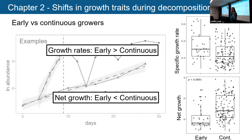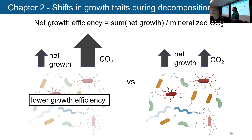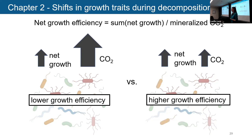I wanted to know how these different strategies relate to carbon cycling in these microcosms. To do that, I calculated something I'm calling net growth efficiency — the sum of the change in abundance of all organisms that grew during a time period, divided by the amount of mineralized carbon dioxide. If a community grew very little in a time frame but emitted a lot of CO2, we'd consider that lower efficiency, whereas if a community grew very little but also emitted very little CO2, we'd consider that higher efficiency — because we're losing less carbon for the same amount of growth.